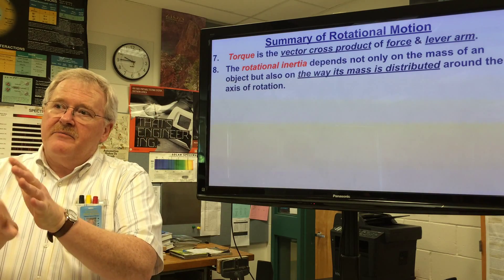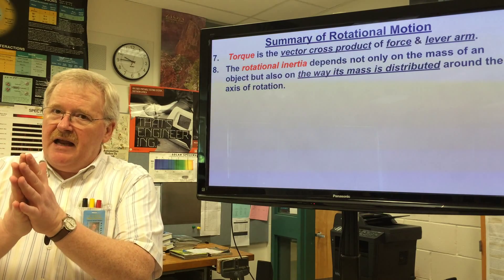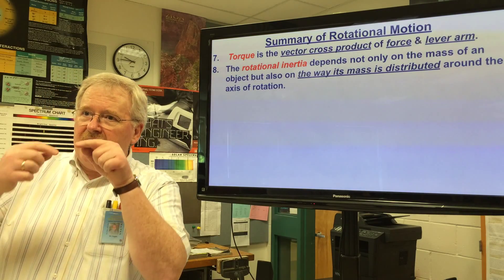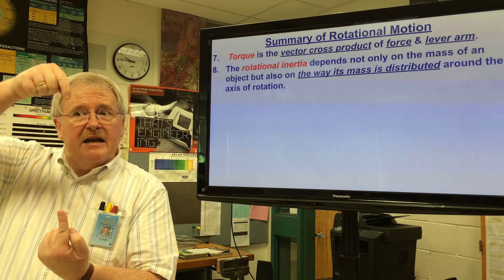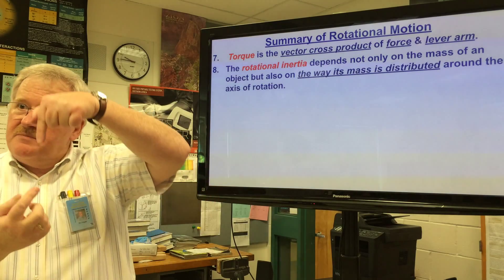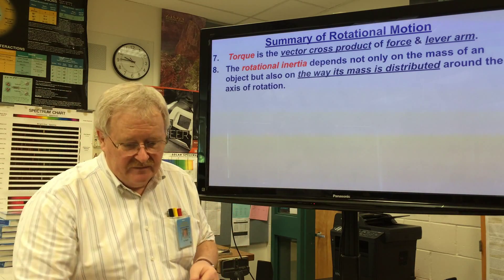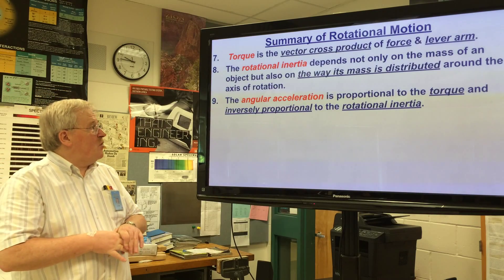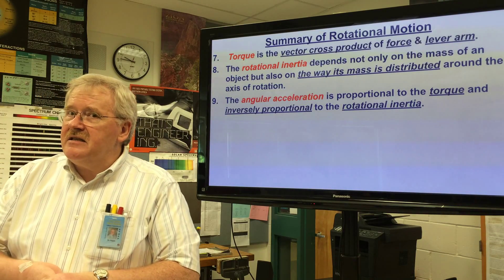Rotational inertia depends not only on the mass of an object but also on the way its mass is distributed around the axis of rotation. So it doesn't just matter how much mass the thing has, it all depends also on which way you're rotating it. You may not be rotating it, if it's a cylinder, around the center of the cylinder - you may be rotating it like a coin on a table, that is it's spinning on its edge. So you've also got to know the axis of rotation.